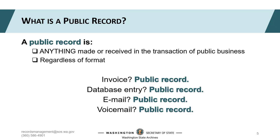The Revised Code of Washington, or RCW, is the legal framework that governs the work we do as employees of state and local government agencies. Chapter 40.14 of the RCW tells you how to manage, destroy, or transfer public records. It also provides a straightforward definition of a public record. According to the RCW, public records are anything made or received in the transaction of public business.